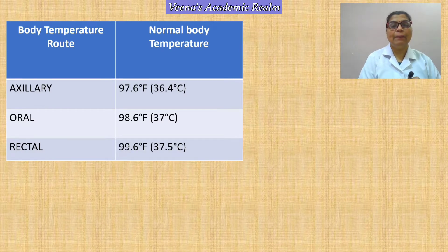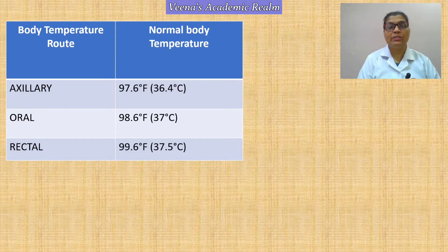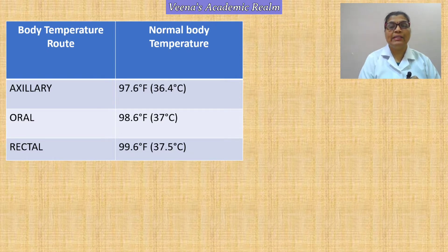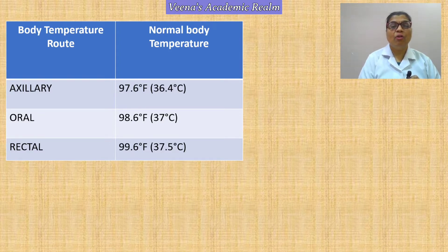As we know, the normal values of body temperature can be checked from different routes. There are three common routes: first is axillary, second is oral, and third is rectal. For adults, we commonly use two routes — axillary and oral. Rectal body temperature is always checked in children. The normal values are: axillary 97.6°F, oral 98.6°F, and rectal 99.6°F. There is a variation of one degree Fahrenheit as per the route of checking body temperature.